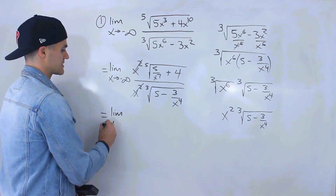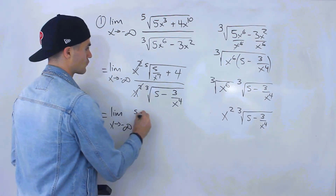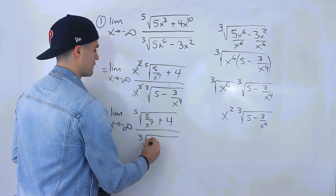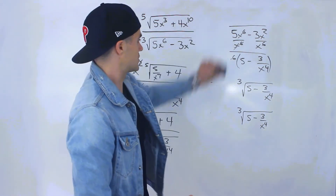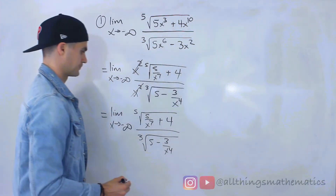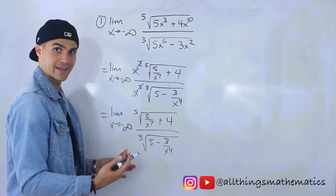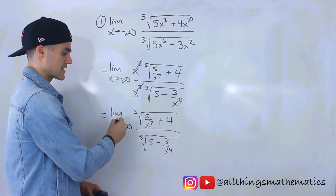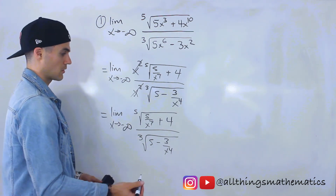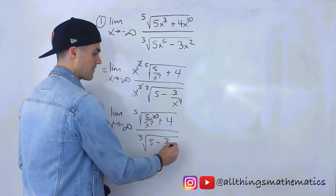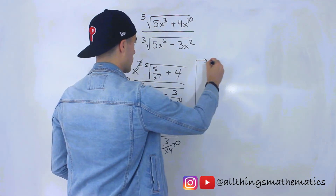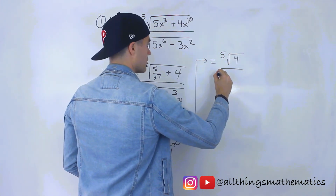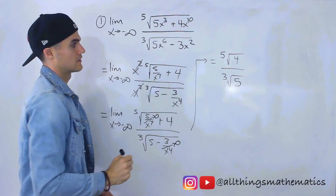What we're left with is the limit as x approaches negative infinity of the fifth root of (5/x^7 + 4) all over the third root of (5 − 3/x⁴). Remember, a constant over x^r where r is a rational number goes to 0 as x approaches negative or positive infinity. So 5/x^7 goes to 0 and 3/x⁴ goes to 0, leaving us with the fifth root of 4 over the third root of 5.